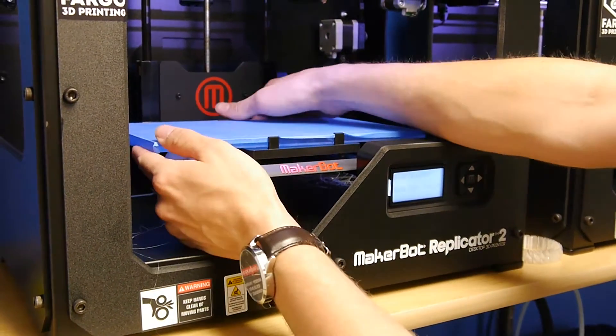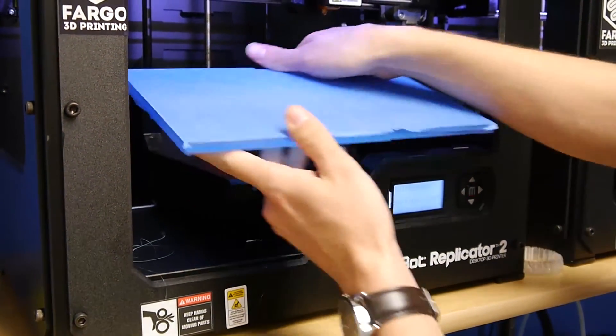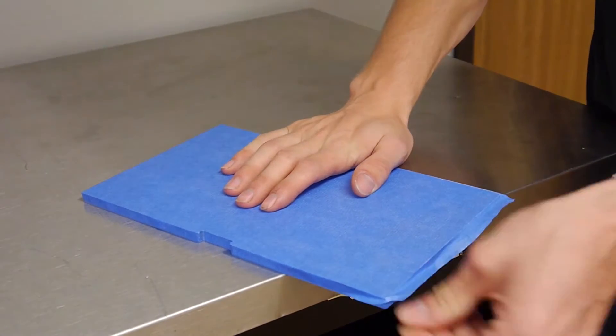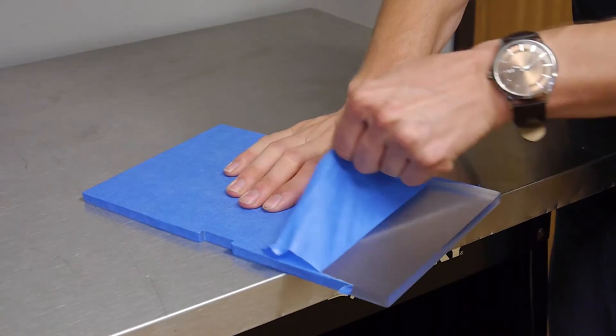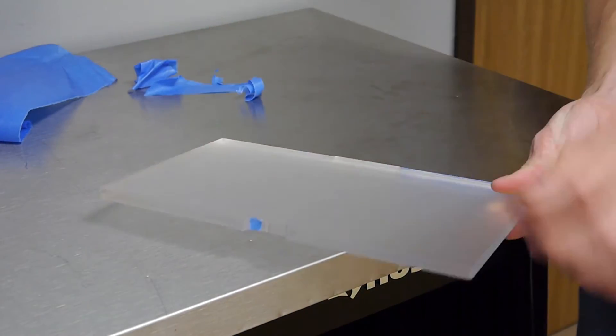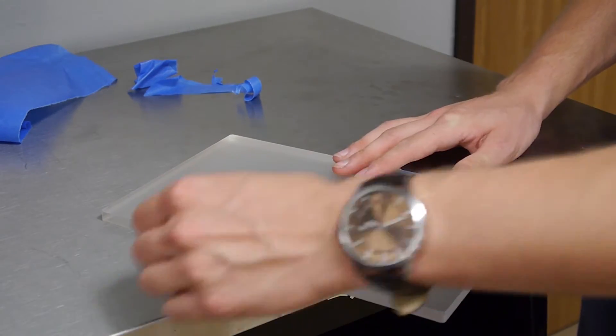So what you're going to want to do is take your current build platform out of your MakerBot Replicator 2. If you currently have blue painters tape on your platform or any other kind of tape, you're going to want to take that off and make sure that the surface is nice and clean with the frosted side up if you have an acrylic build plate.